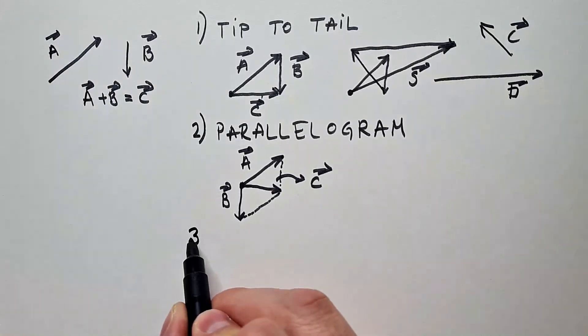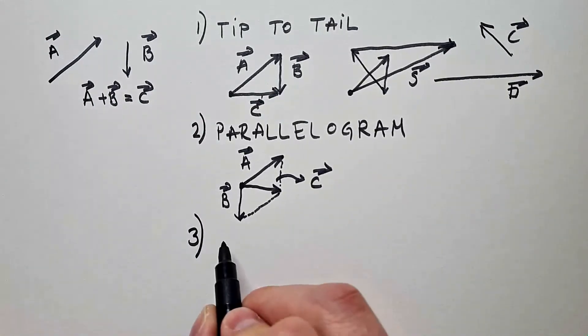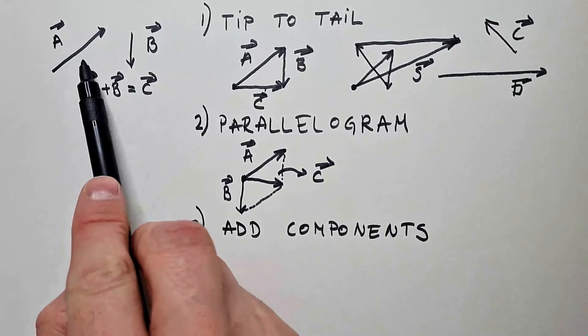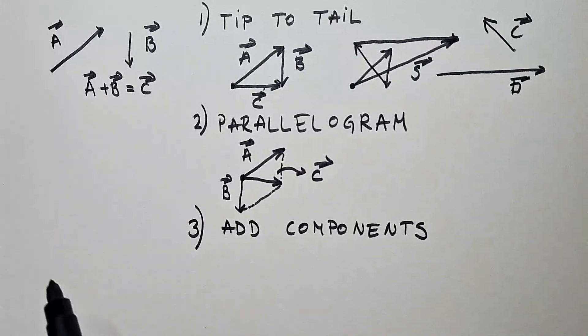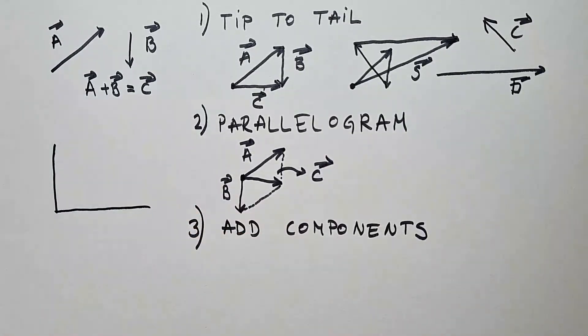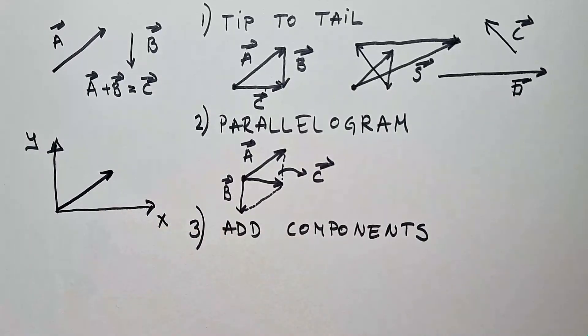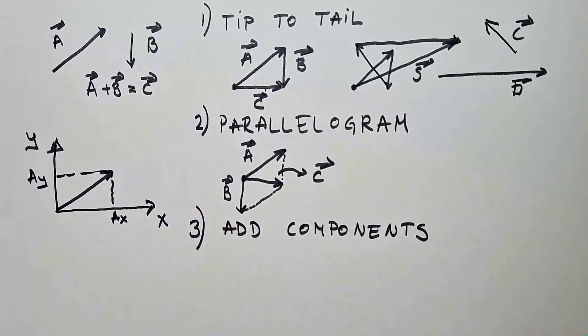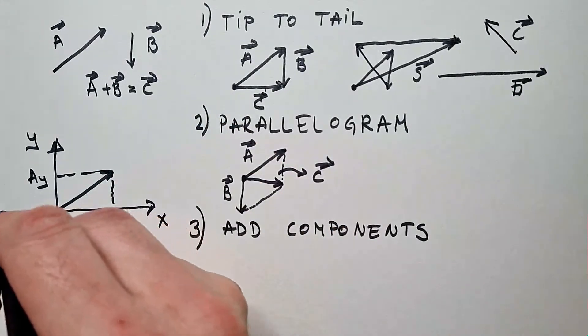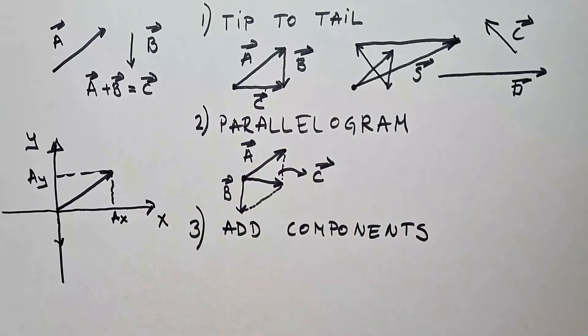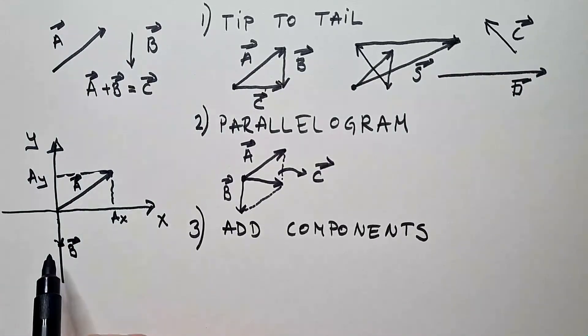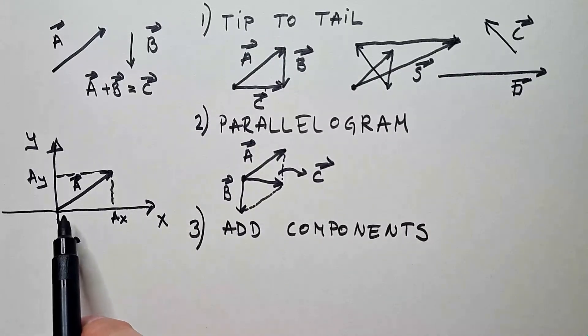And the third way is adding components. And this is the method that is employed in numerical models and when we do these things on a computer. We know that vectors can be decomposed. For example in a Cartesian coordinate system that I described in one of the previous videos. And I have vector A sitting over here. Then this is AX. This is AY. In this coordinate system we can see that vector B. So this is vector A. Here is vector B.